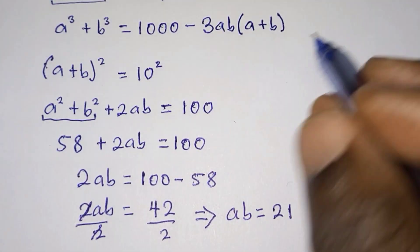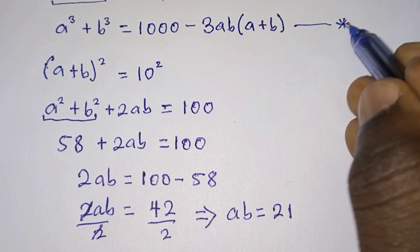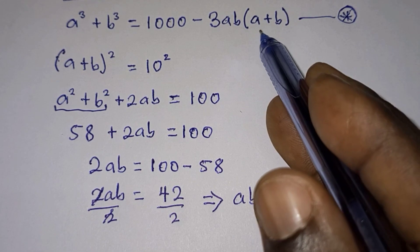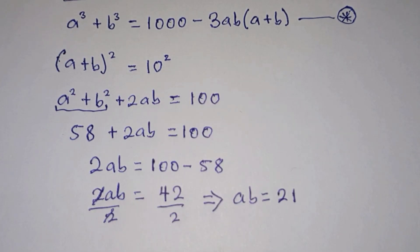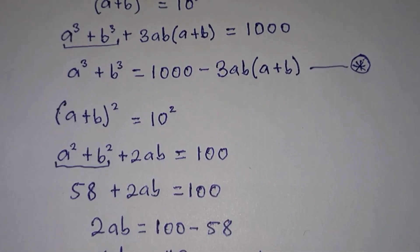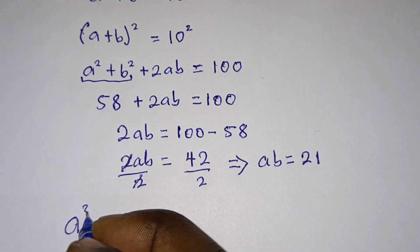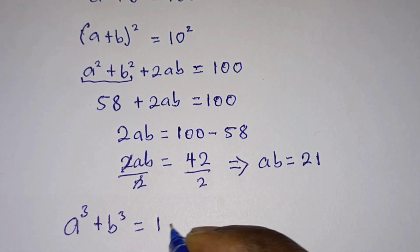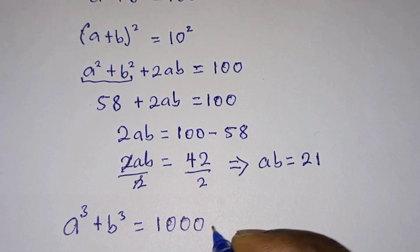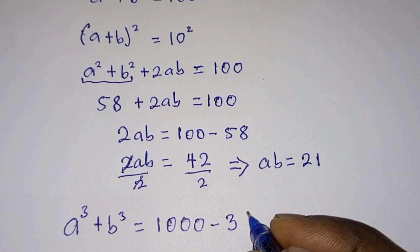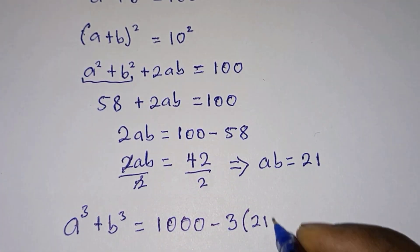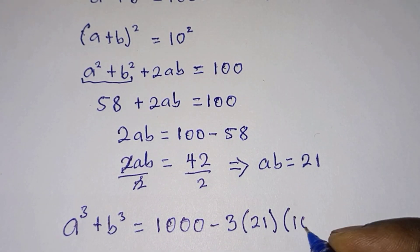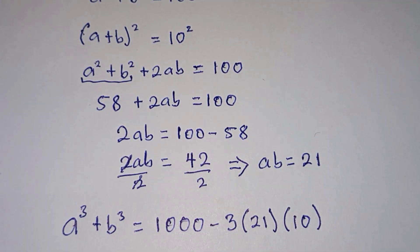Let's go back to our main equation — let's call it equation star. We now know ab is equal to 21 and a plus b is equal to 10. Plugging these values into equation star, we get a cubed plus b cubed is equal to 1000 minus 3 times 21 times 10.